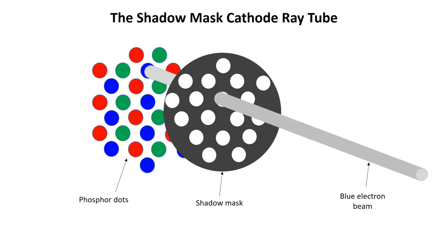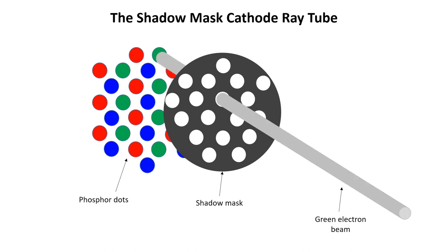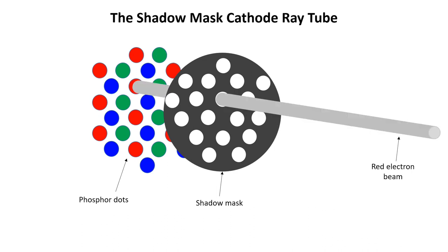So the electron beam carrying the blue video signal only excites the blue phosphors. The electron beam carrying the green video signal only excites the green phosphors. And the electron beam carrying the red video signal only excites the red phosphors.